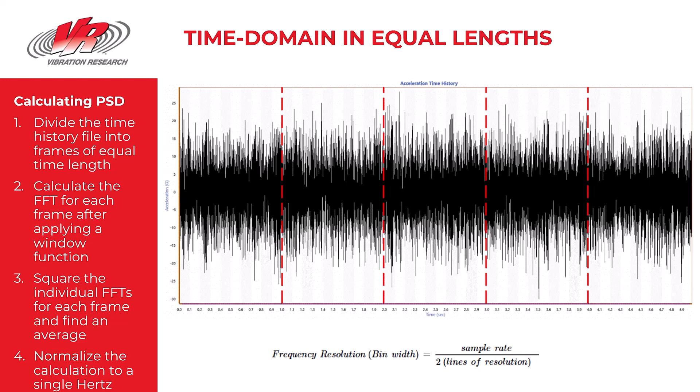The first step in taking the time domain data and converting it into frequency domain — in other words to make the PSD — is to take the time domain data and cut it into equal length bins. The lines of resolution play a role in determining the width of these bins, or what we might call the frequency resolution. The bin width or the frequency resolution is equal to the sample rate divided by two times the lines of resolution.